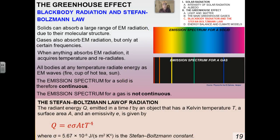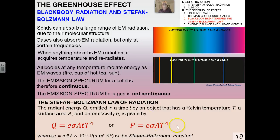I'm going to give you the Stefan-Boltzmann law of radiation right now. Stefan-Boltzmann says the radiant energy emitted in a time t by an object that has a Kelvin temperature T, surface area A, and emissivity E is given by this equation. Notice that the temperature in Kelvin is raised to the fourth power. Sigma is called the Stefan-Boltzmann constant, which will always be given to you. If we divide both sides by t, we get power. So the version we'll use most often is P equals emissivity times sigma times area times Kelvin temperature to the fourth power.